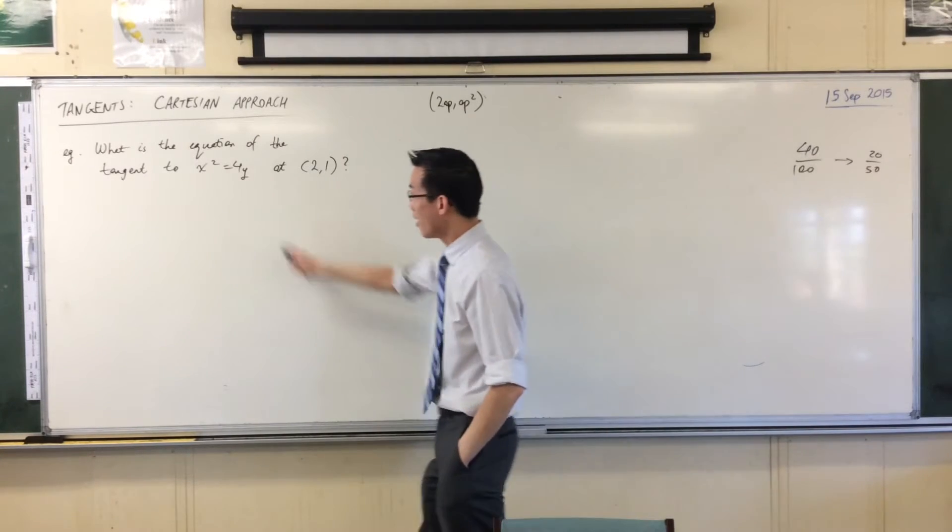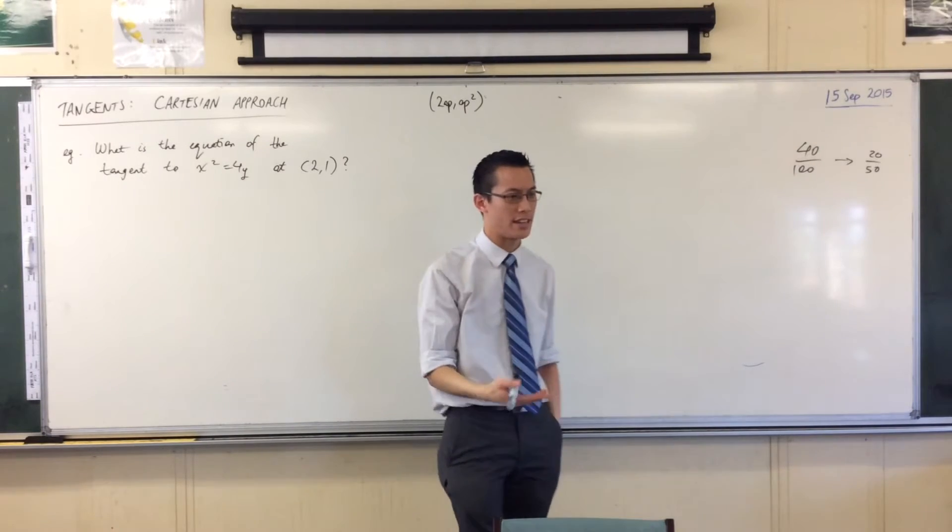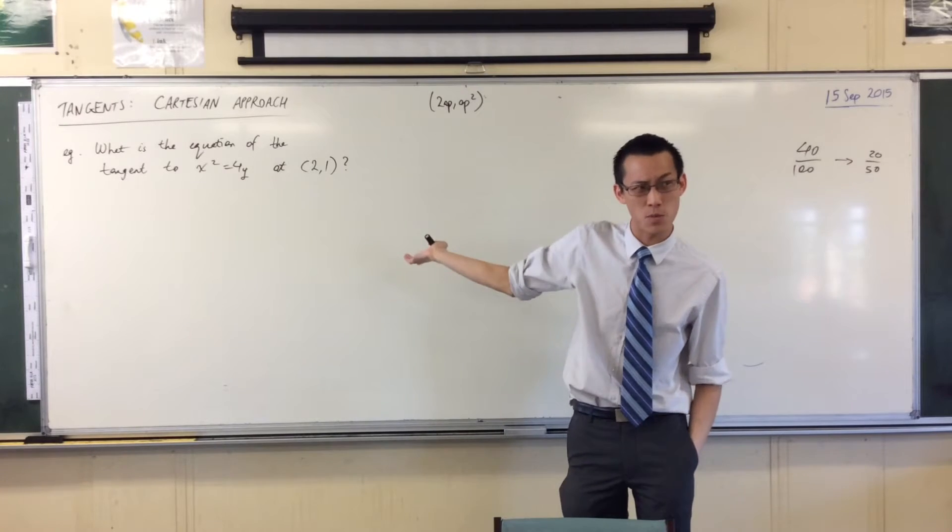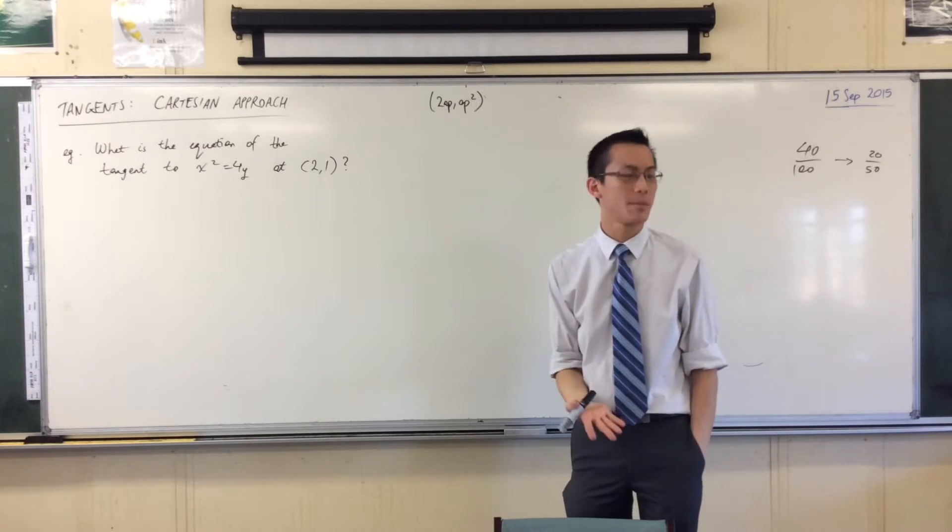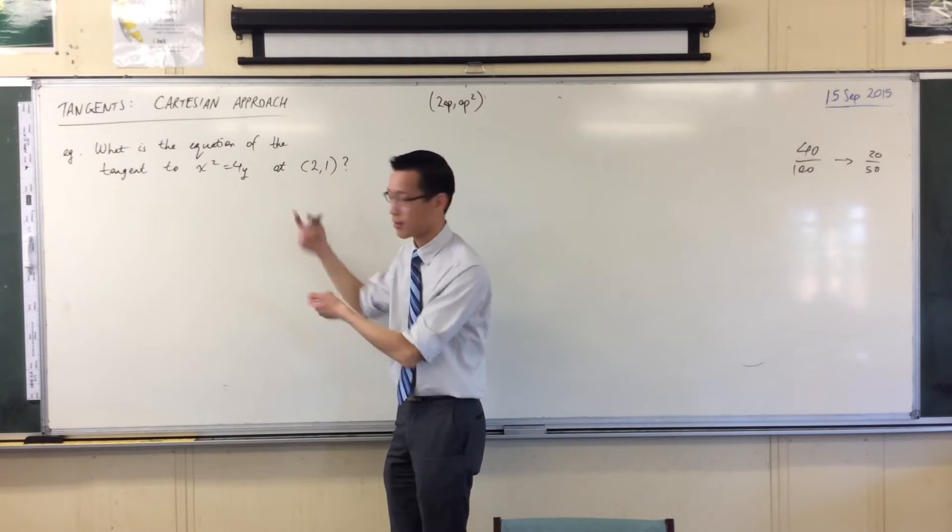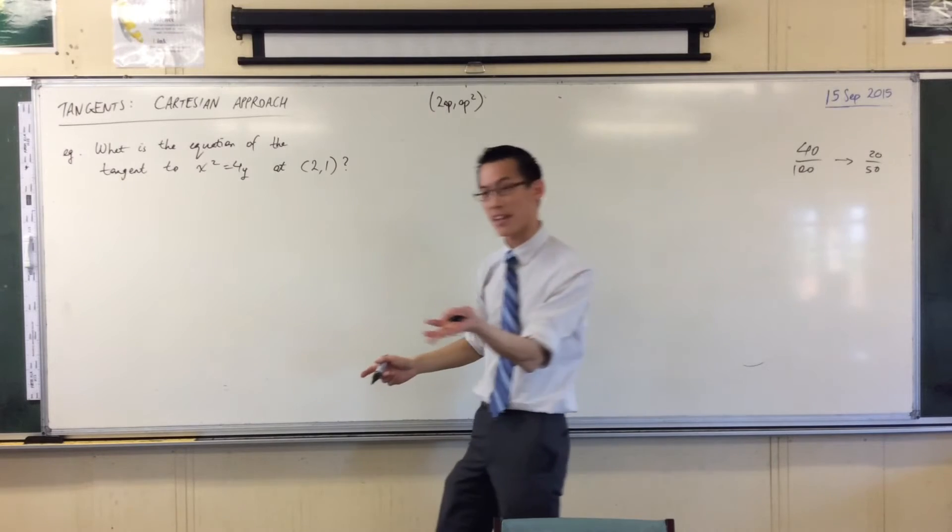Bring the 4 to the other side, so you isolate the Y. So X squared equals 4Y. This is kind of written in locus form. You can see the, what's the focal length of this parabola? Just reading it off. A is going to be 1, because 4AY, A must be 1 in this case. But in order to work with it in Cartesian terms to differentiate and that kind of thing, I want Y to be the subject.